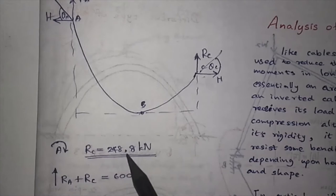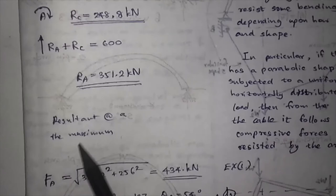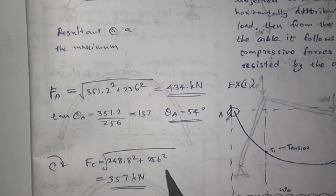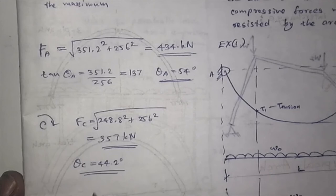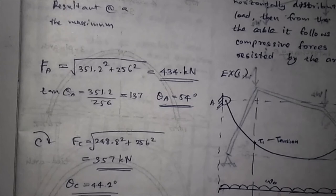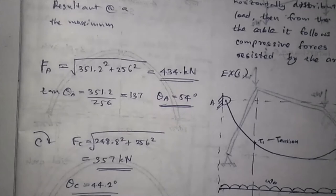The resultant at A and maximum tension can also be found by taking the moments and equilibrium equations. You can find the angle also. That's how we work out the example of cables. We can meet with the analysis of arches in the next YouTube video. Until then, hang with us, subscribe, and share for the knowledge. Thank you very much.